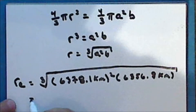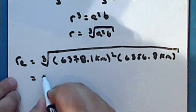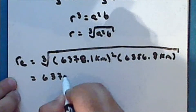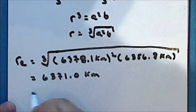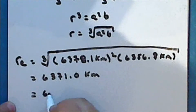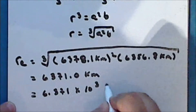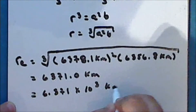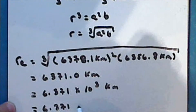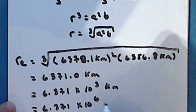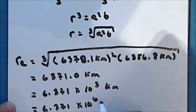So to five significant figures, this is 6,371.0 kilometers, which is the same as 6,371 times 10 to the third kilometers, or 6,371 times 10 to the sixth meters.